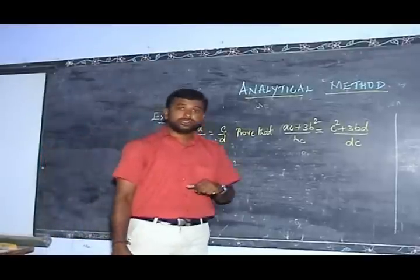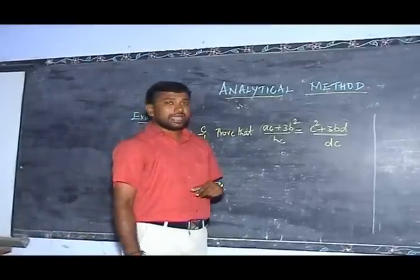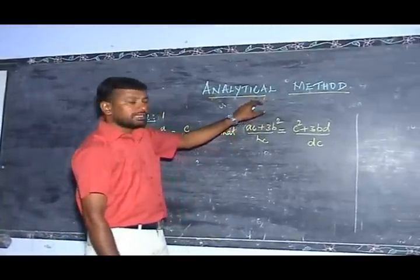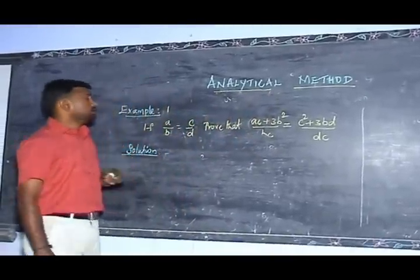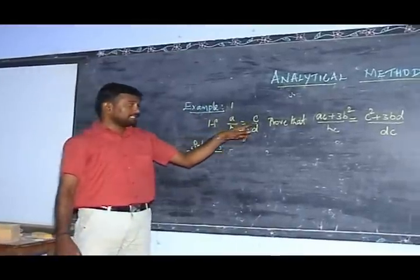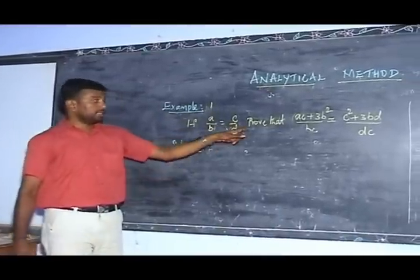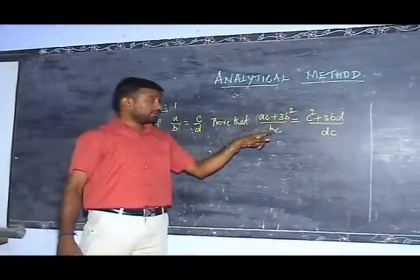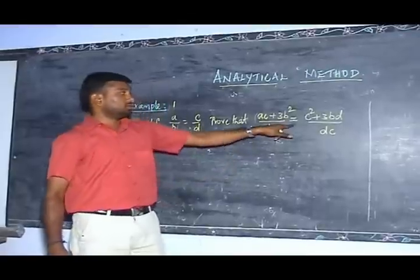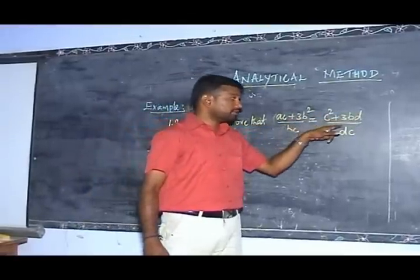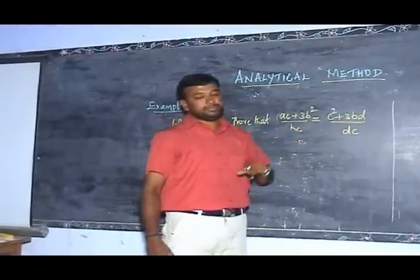Now I am going to teach Example 1 of the analytical method. If A to B is equal to C by D, prove that AC plus 3B squared divided by BC is equal to C squared plus 3BD divided by BDC.